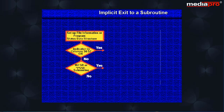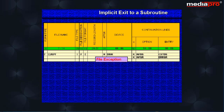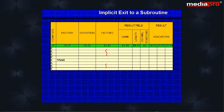The last method we can use is the implicit exit to subroutine method. When an exception occurs and the system does not find an indicator specified in columns 56 and 57, it checks to see if an implicit subroutine has been specified. In the case of file exceptions, it checks for the INFSR continuation option on the file specification of the file which has caused the exception and executes the subroutine specified there. In the case of program exceptions, the system will check whether a subroutine named *PSSR is present and will execute the subroutine if it is present.